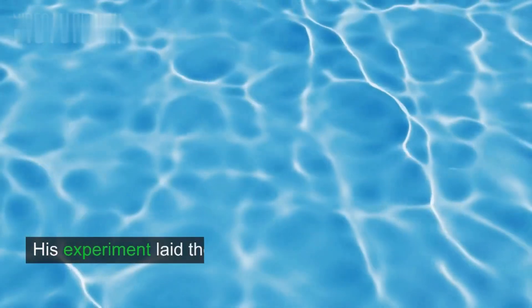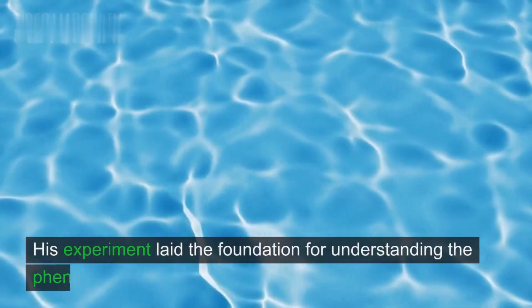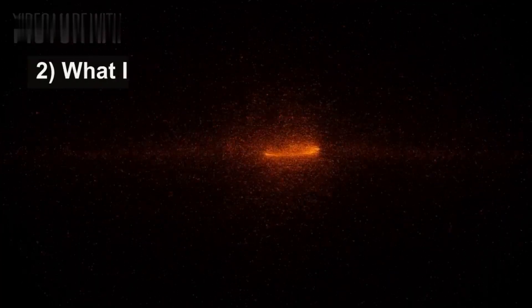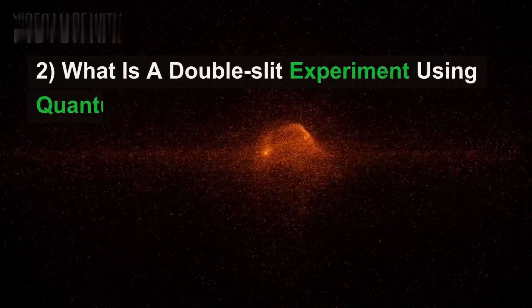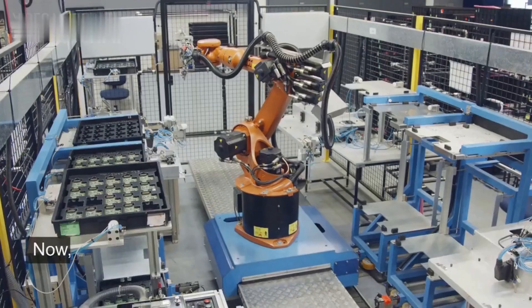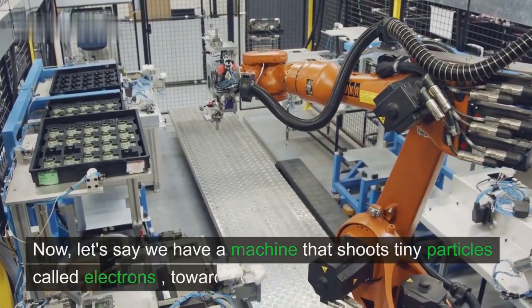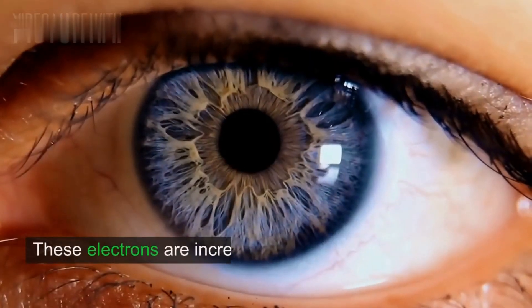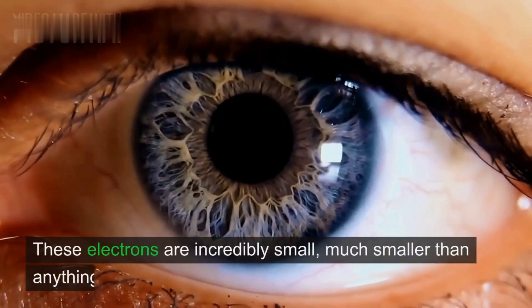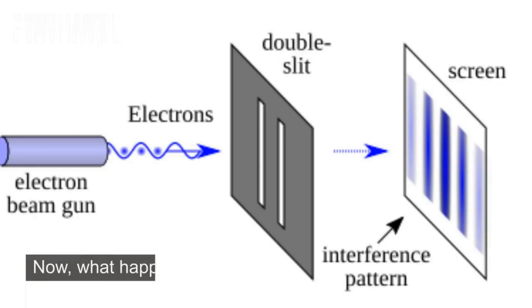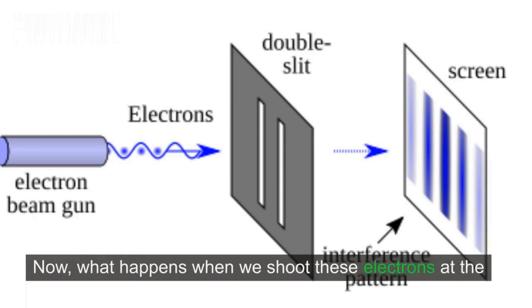What is the double-slit experiment using quantum particles like electrons, and what can we learn from it? Now, let's say we have a machine that shoots tiny particles called electrons towards this wall. These electrons are incredibly small, much smaller than anything you can see with your eyes. What happens when we shoot these electrons at the wall?